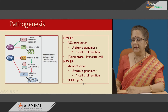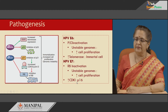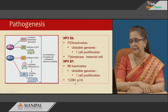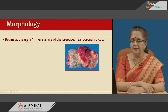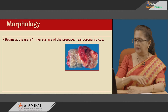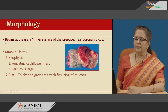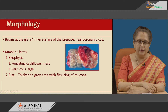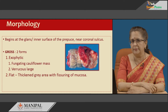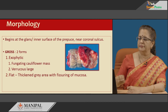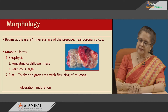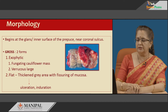HPV E7 also causes an increase in p16 levels by increasing CDKI. Morphologically, these tumors characteristically start in the glans or inner surface of the prepuce near the coronal sulcus and progressively enlarge to encroach on adjoining areas of the penis. Grossly, two forms are seen: a flat one or an exophytic lesion. The exophytic lesion can be a fungating cauliflower-like mass or a large verrucous mass. The flat lesion is characterized by thickened grey mucosa with fissuring, which later ulcerates with induration at the edges.